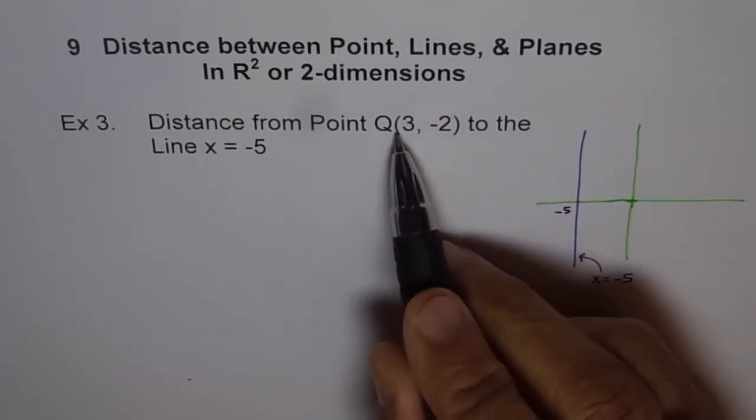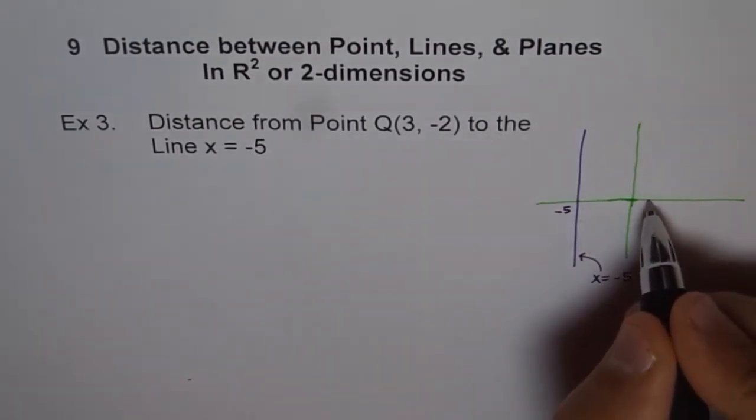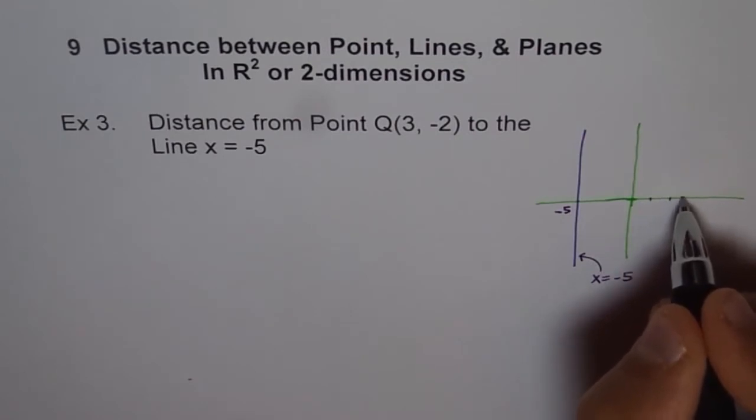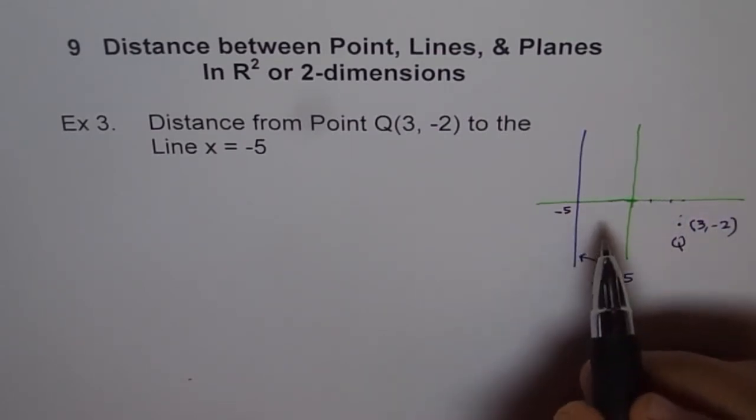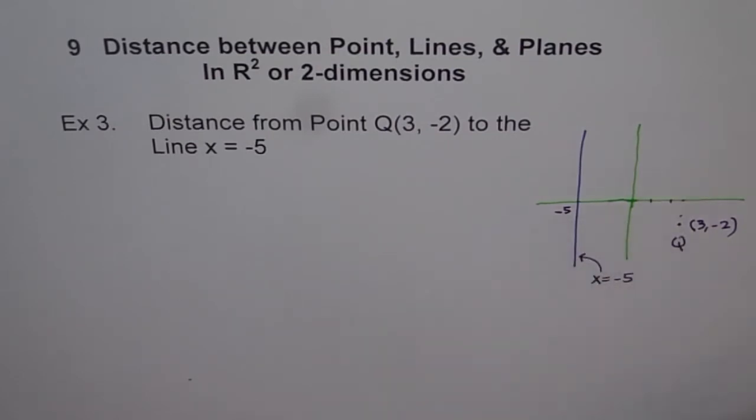And I have a point 3 and minus 2. That means 1, 2, 3 and 1, 2. Let's say this is my point Q, which is 3 and minus 2.